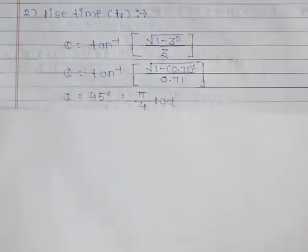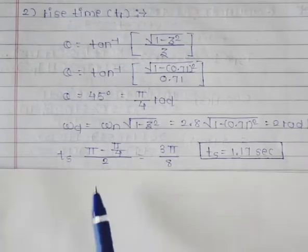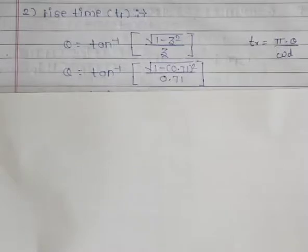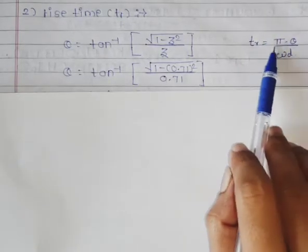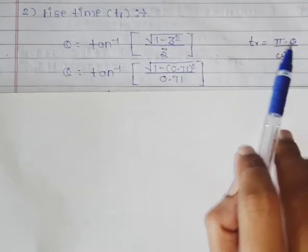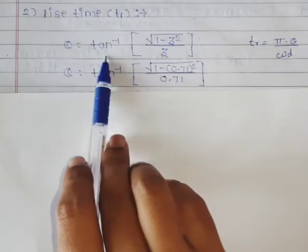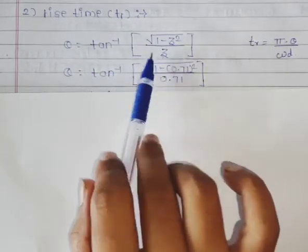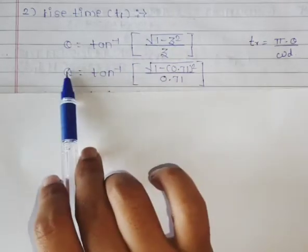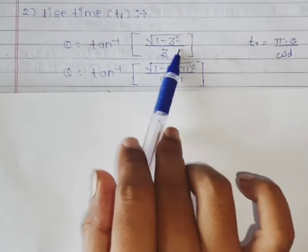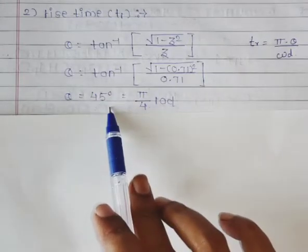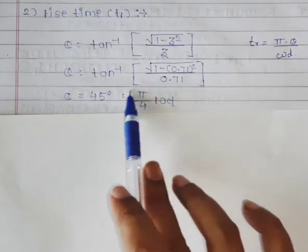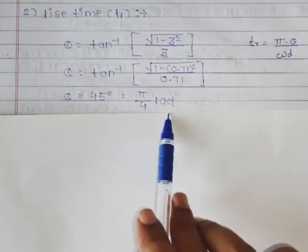Next, find the rise time tr. The formula for tr is: tr = (π − θ)/ωd. You need to know θ and ωd. First, let's find θ using the formula: θ = tan⁻¹(√(1 − ζ²)/ζ). Putting in the value ζ = 0.71, theta comes out to be 45 degrees.